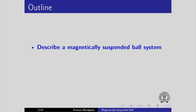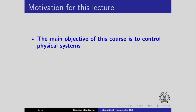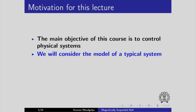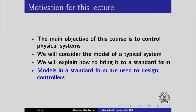Hello everyone. In this video, I am going to introduce a magnetically suspended ball problem. The outline of this lecture is as follows: I will present a magnetically suspended ball system, linearize it around an operating point, and represent it in state space form. The main objective of this course is to control physical systems. We will explain how to bring it to a standard form, x dot equals fx plus gu. Models in standard form are used to design controllers. That is the motivation for this lecture.